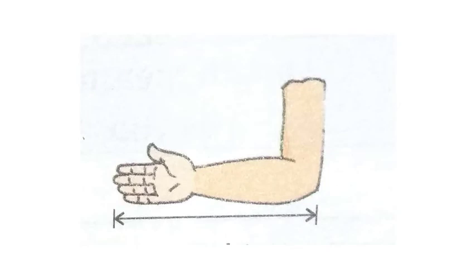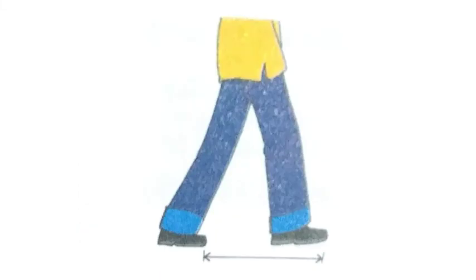Cubit is the measurement from the elbow to the tip of your middle finger. It varies from person to person because everyone does not have the same size hands. Pace is the distance between two feet. These are all non-standard units and are not reliable for measurement, so now we use standard units of length.